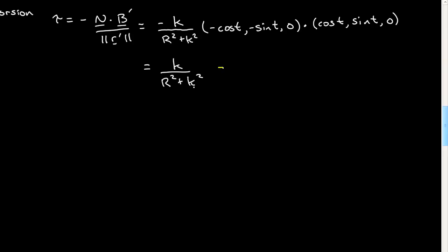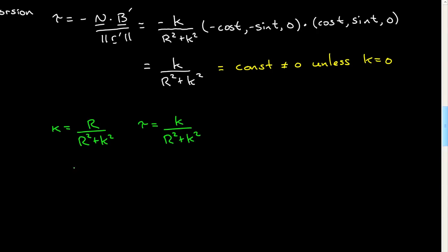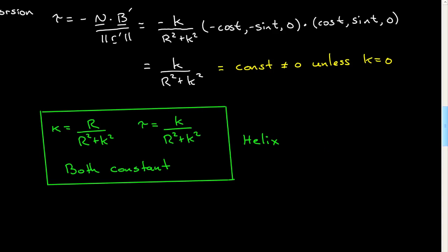That then is the torsion for the helix. The things to note are: this is again constant, as with the curvature, and it's not equal to zero unless k equals zero. Because they're rather important, we have that the curvature for the helix κ = R/(R² + k²), and the torsion τ = k/(R² + k²). Both are constant. We started with a general parameterization of a helix and derived that the torsion and curvature are constants. In fact, this is the property of a helix. Any space curve with constant non-zero curvature and torsion is in fact a helix. That's its defining property.